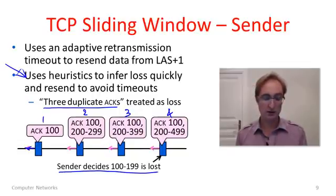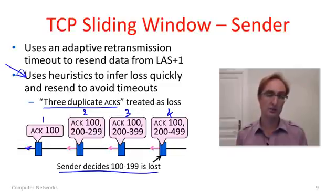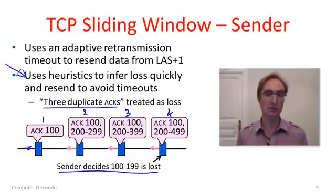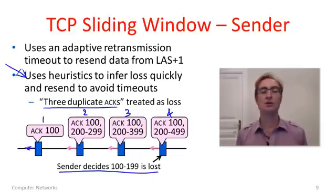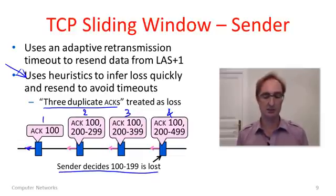Three duplicate ACKs is used as a trade-off, because we don't actually know for sure if that packet is late in the network or lost. It could have been late because it took a slightly different path through the network. So waiting for three duplicate ACKs provides a little bit of robustness against some packet reordering. And you can also see that if you simply had the ACK numbers and none of these SACK blocks, you could also make the same guess that what was beyond 100 was probably lost. So TCP uses these heuristics, and we'll see more about it when we get to congestion control.